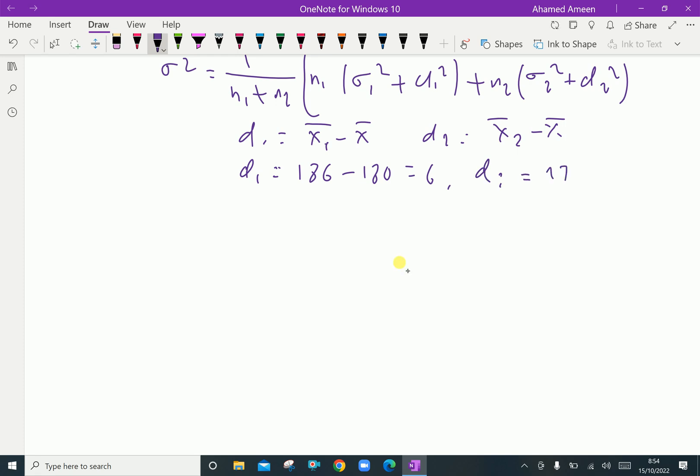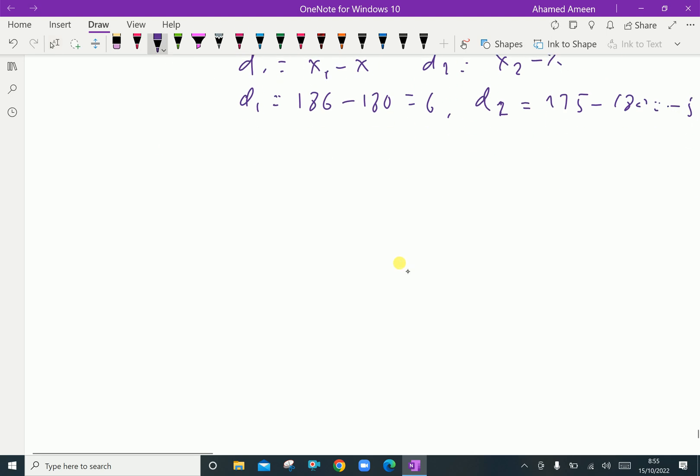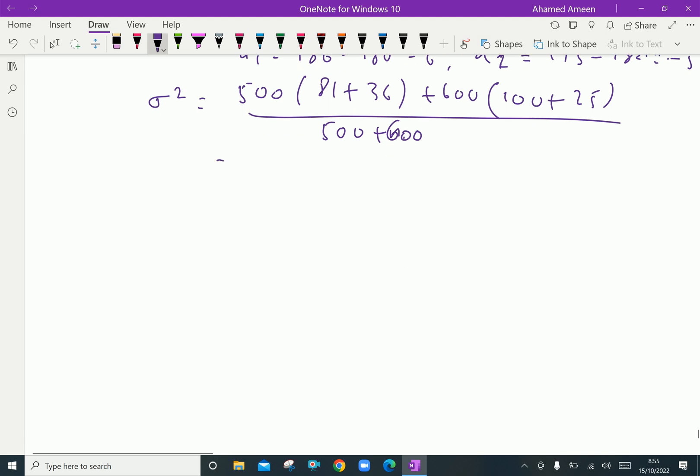Applying the values, σ² equals [500(81 + 36) + 600(100 + 25)] / (500 + 600), which equals 121.36.